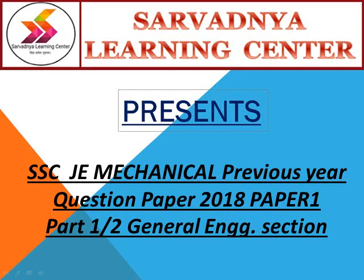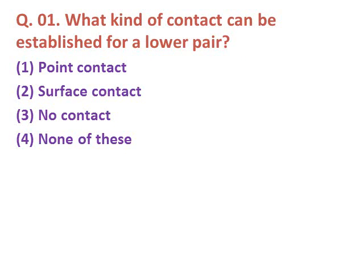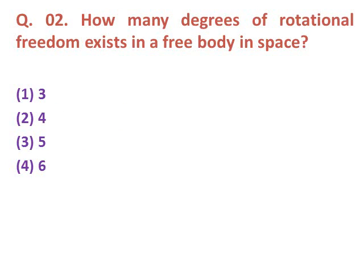Question one: What kind of contact can be established for a lower pair? Option one: point contact. Option two: surface contact. Option three: no contact. Option four: none of these. The correct answer is surface contact — the contact established in a lower pair is surface contact.